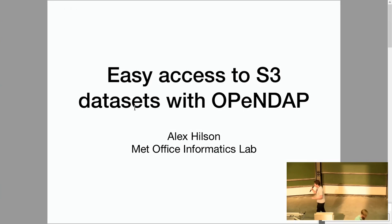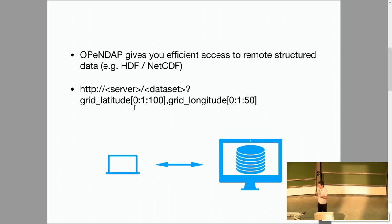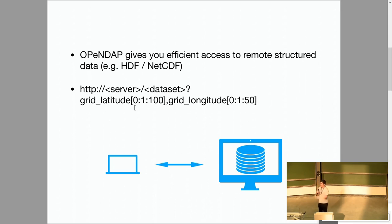I'm going to talk today about an easy way that you can access structured datasets from within S3 without moving them out. OpenDAP is a really cool protocol and project that lets you subset remote datasets. The traditional way you might set that up is to have a bunch of data on a server, and then a client can access data on the server through an API.